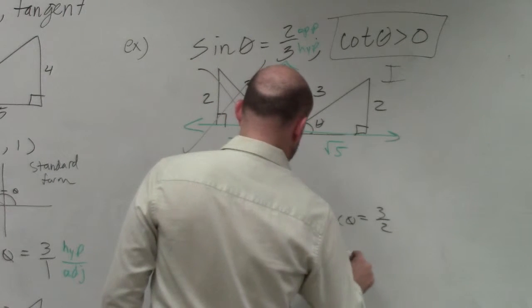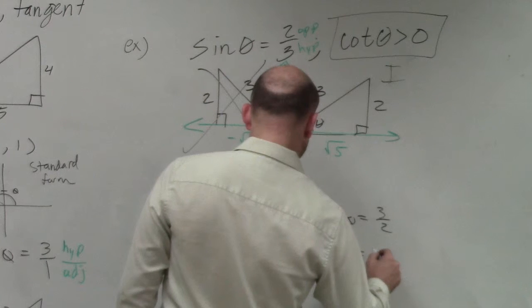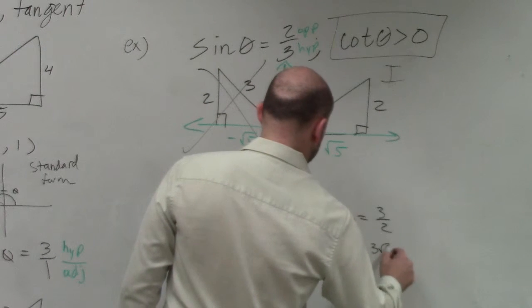Cosine of theta is square root of 5 over 3. So secant of theta, I'm going to do this quickly, is going to be 3 square root of 5 over 5.